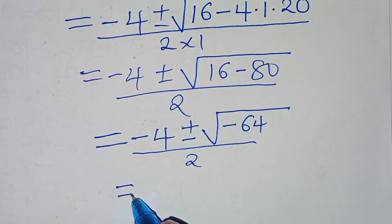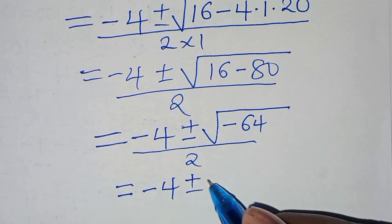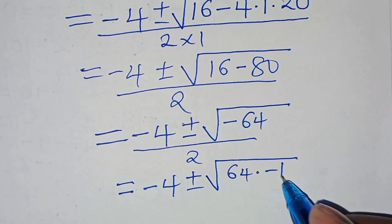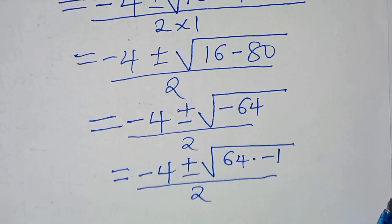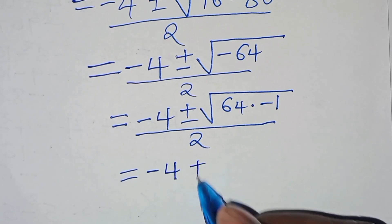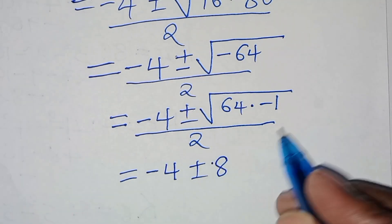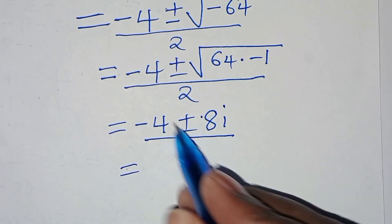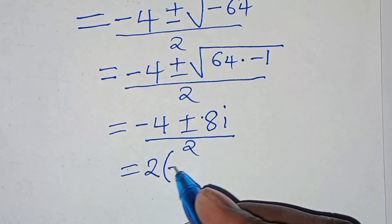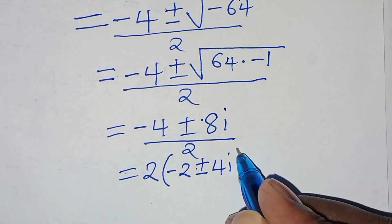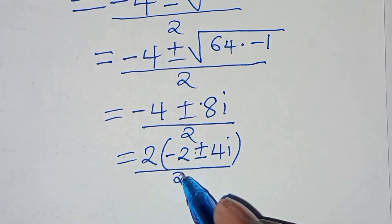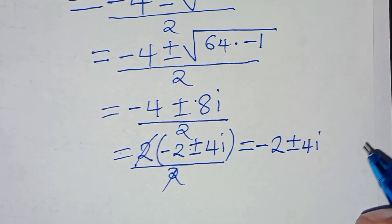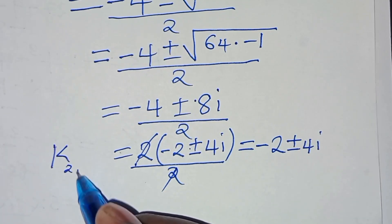We express the square root of negative 64 as the square root of 64 times negative 1. The square root of 64 is 8, and the square root of negative 1 is i. So we have negative 4 plus or minus 8i divided by 2. Factoring out 2 gives 2(negative 2 plus or minus 4i) divided by 2, which simplifies to negative 2 plus or minus 4i.